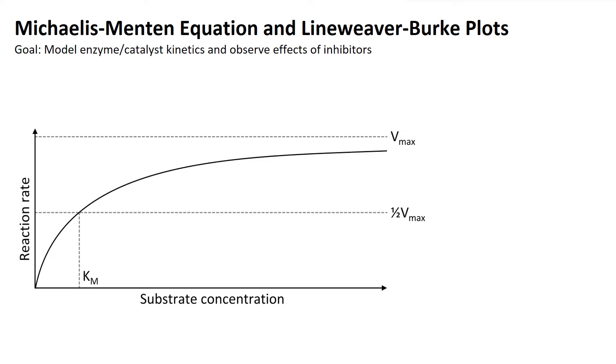This is a way of visualizing the types of graphs that we get. The goal is to model enzyme or catalyst kinetics and observe the effects of inhibitors, as well as other things that can affect the rates of our reaction.